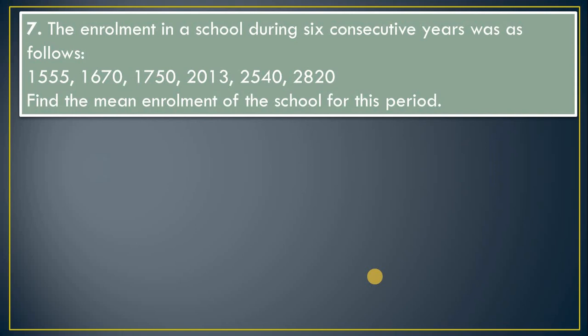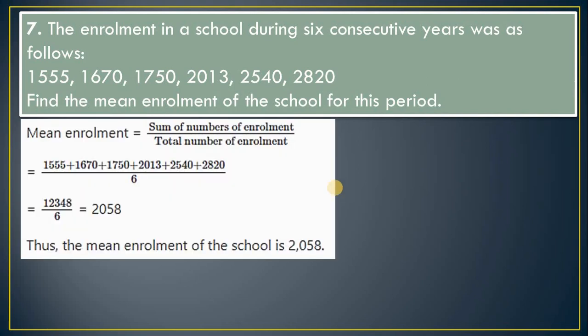Question 7: During six consecutive years, the enrollment of the school was as follows — find the mean enrollment. Addition of all values divided by 6 gives 2058 as the mean enrollment.